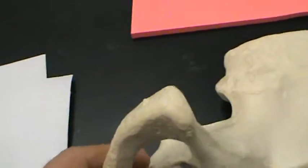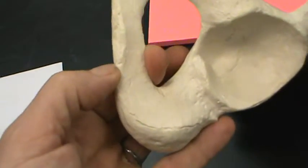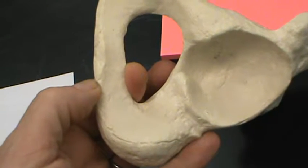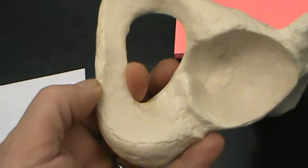And what about right down here? In this spot? Right here? This would be the ischial ramus.